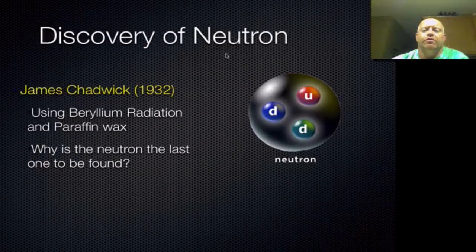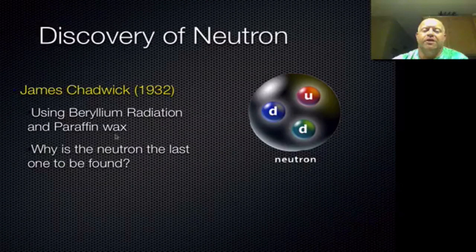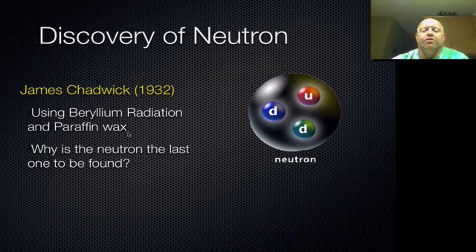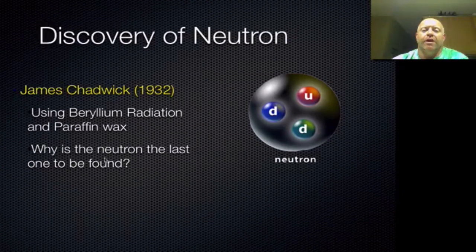The last key particle discovered was the neutron, by James Chadwick in 1932. He used radioactive beryllium and beamed it into a paraffin wax, which is a dense wax. He found that the particles were embedding further into the wax than they should if you only calculated the mass of protons and electrons — almost twice as far as expected, meaning the mass must be double what they expected. From those calculations, he was able to deduce that there was another set of particles, which we now call the neutron, that was also part of the nucleus or core of the atom.